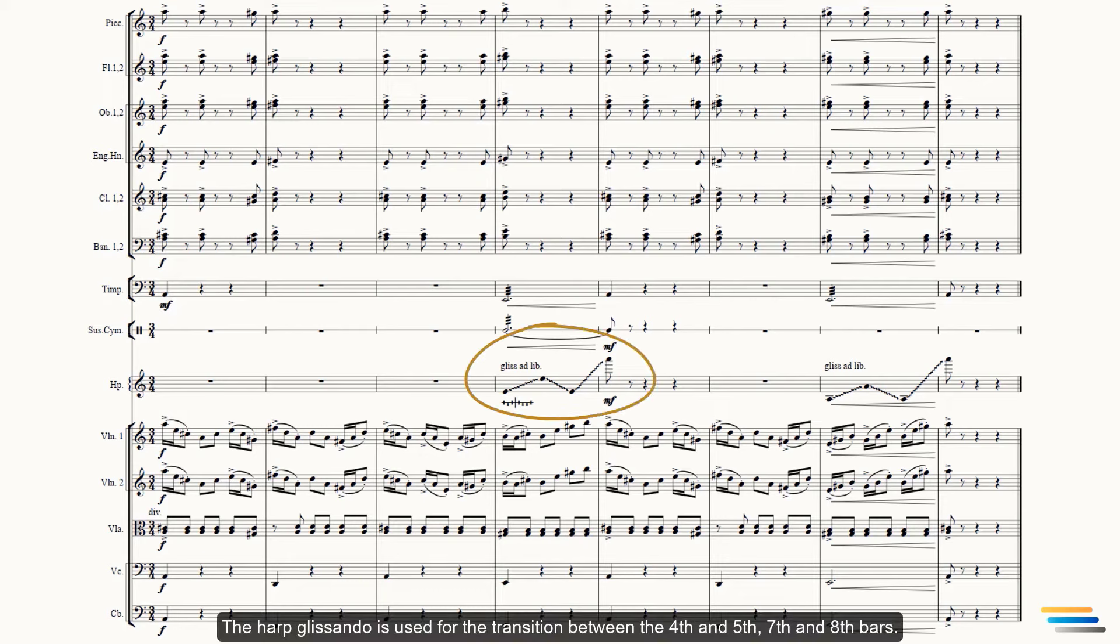The harp glissando is used for the transition between the 4th and 5th, 7th and 8th bars. The glissando is notated with stemless notes indicating that the glissando is to be played roughly between these notes. The harp pedals are tuned to the key of A major.